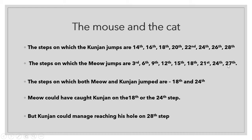Kunjan was standing on the 14th step and he is jumping on numbers which come in the table of 2: 2×7=14, 2×8=16, 2×9=18, 2×10=20, 2×11=22, 2×12=24, 2×13=26, and 2×14=28.